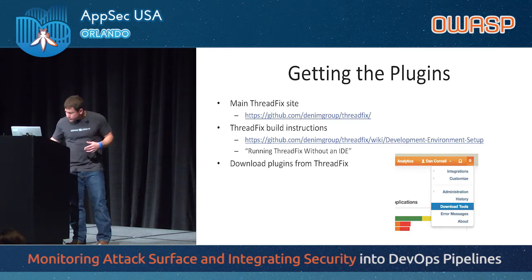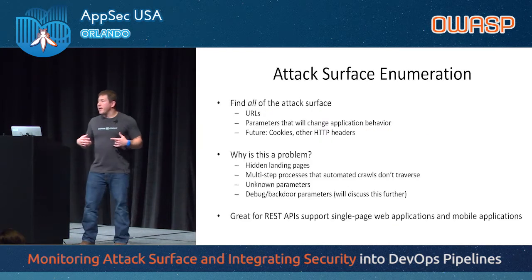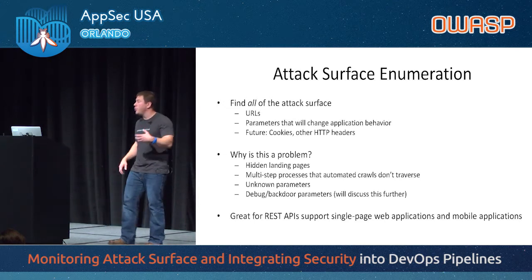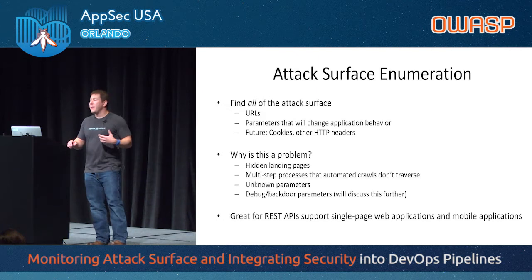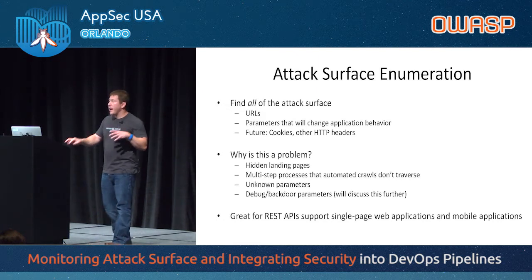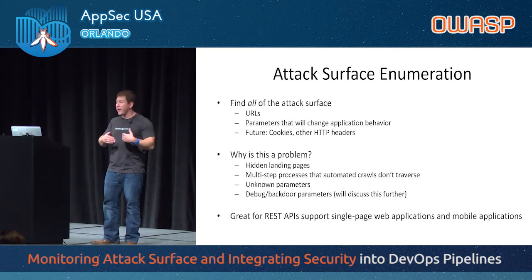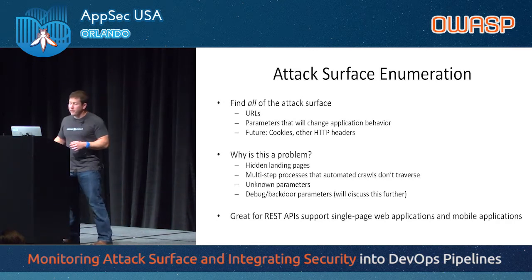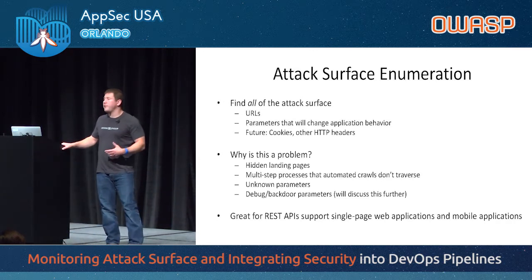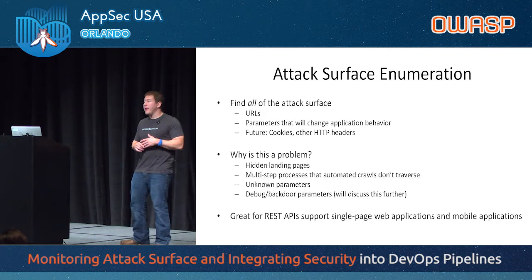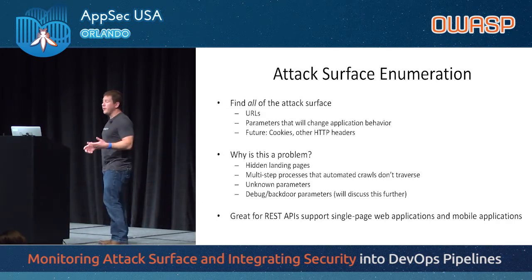What we can do is pre-seed scanners in order to give them that information. We're going to enumerate the attack surface — find all of the URLs that the application will respond to, find all the parameters that might change the behavior of the application. Using that knowledge, we can seed a scan. Are there hidden landing pages? Are there multi-step processes that the crawler can't figure its way through? Unknown parameters, debug or backdoor parameters? This is also very useful for REST APIs — if you've got a Java Spring REST API, that's not something you're going to be able to crawl based on HTML and JavaScript evidence, but if you know about this you can enumerate the API and know from a testing standpoint what you need to focus on.